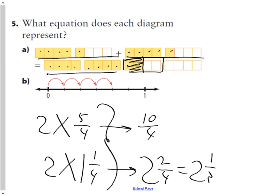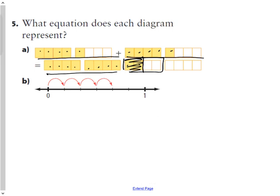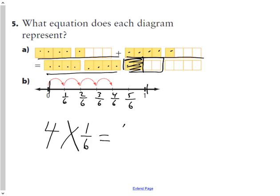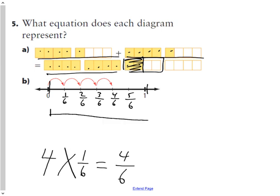The next question gives us a number line between zero and one with six spaces — so each space represents one-sixth. If each jump is a sixth and I make four jumps, I land on four-sixths. In lowest terms, four-sixths reduces to two-thirds. So cutting it into thirds instead of sixths, four jumps leaves you at two-thirds.